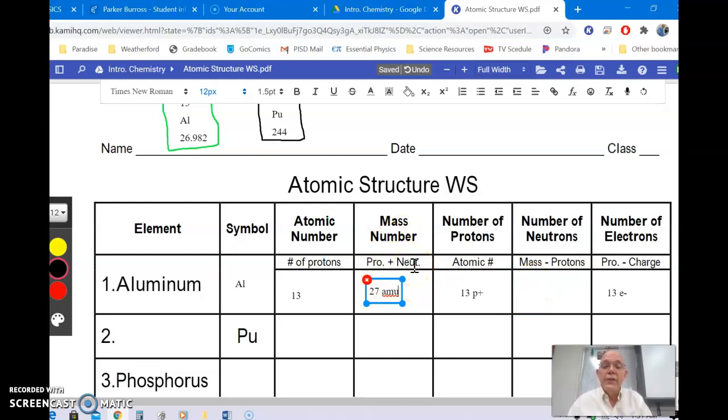Now, this is the protons and the neutrons added together. So, if we have 13 protons and we have 27 protons and neutrons, or think of it this way, 27 protons and neutrons, but 13 of them are protons, how many of them are neutrons? Well, we would subtract 27, the mass, minus the protons, and we would get 14.